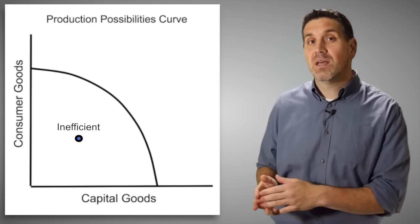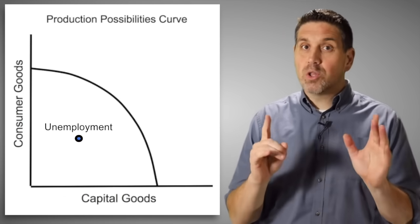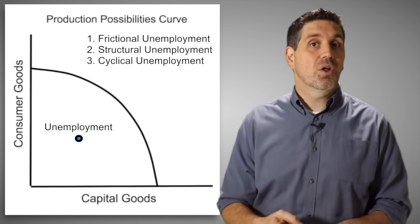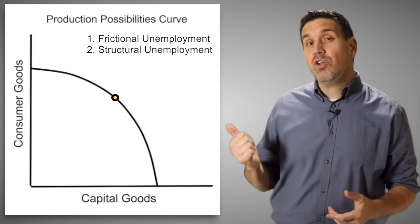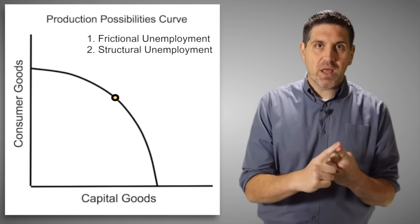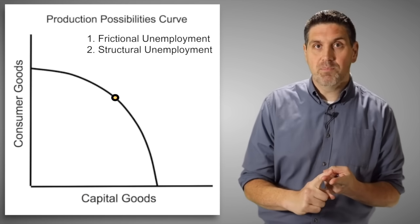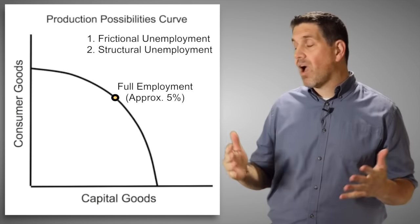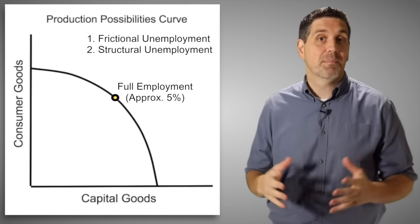That shows the concept of unemployment. In unit two, you learn there are actually three types of unemployment: frictional, structural, and cyclical. Even when the economy is doing great, you're still going to have two types of unemployment — people between jobs, frictionally unemployed, and people being replaced by robots, so structural unemployment. This line represents the idea of full employment. No matter what, even if the economy is doing great, we're still going to have something like 5% unemployment.